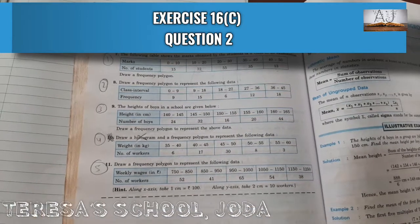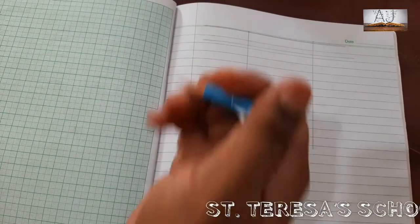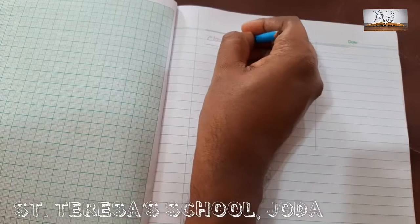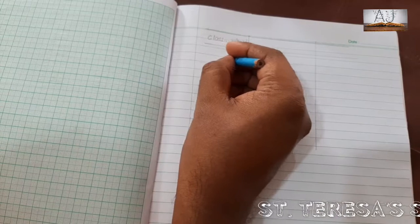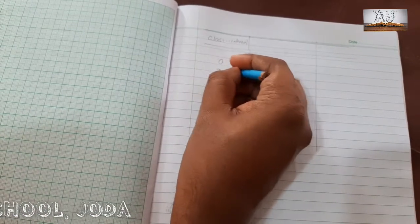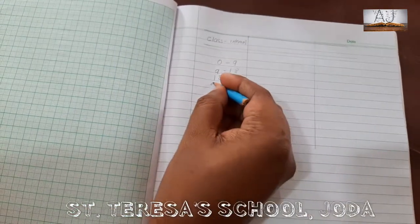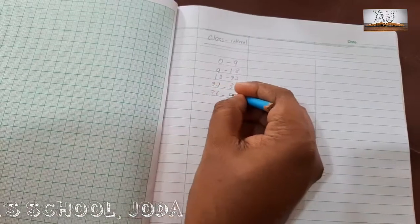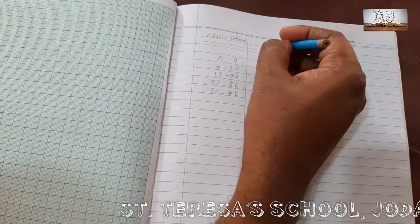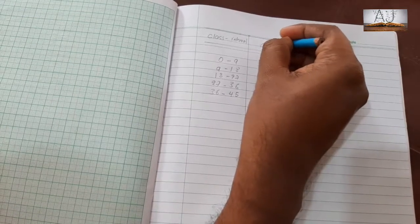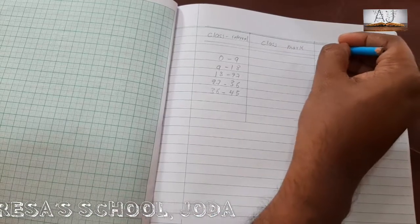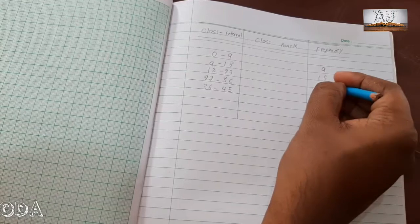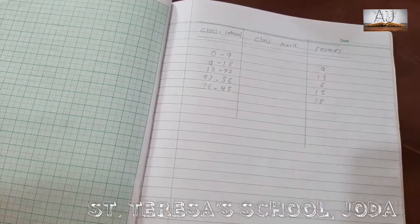First of all we need to draw three columns. In the first column we'll write the class intervals which are given in the question. You have to skip one row and after that write, because we need to write something else there. The class intervals are 0 to 9, 9 to 18, 18 to 27, 27 to 36, and 36 to 45. The second column is for the class mark, and the last one is for frequency. The respective frequencies are: 9, 15, 6, 12, and 18.